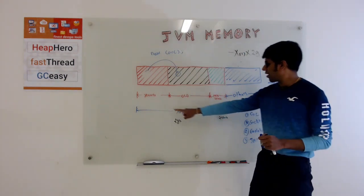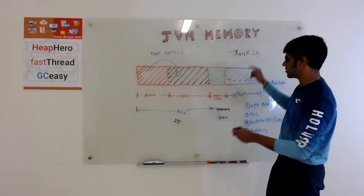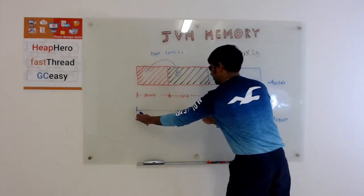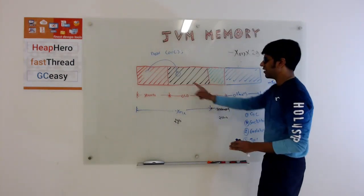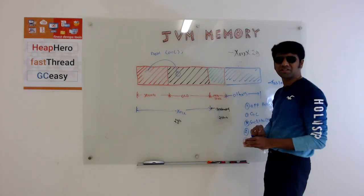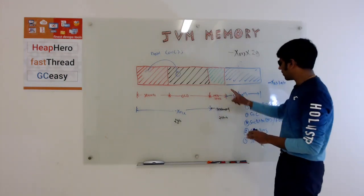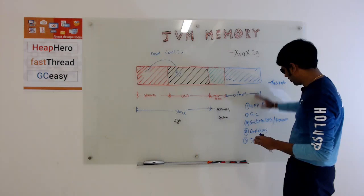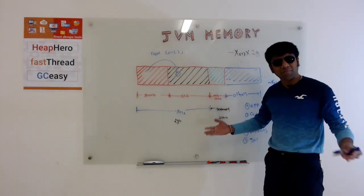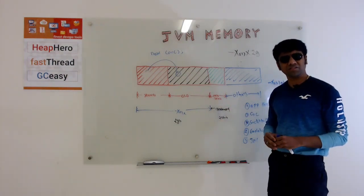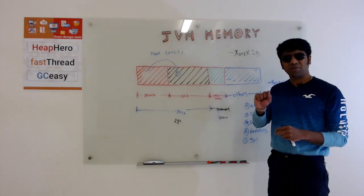Thus, when you define XMX, you are only defining the portion of this region, which is young generation and old generation. On top of it there is metaspace, on top of it there is the others region which has all these things, so they all take up memory.